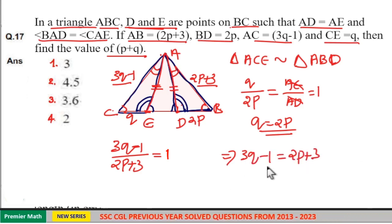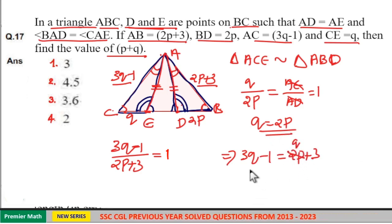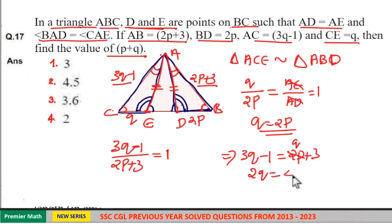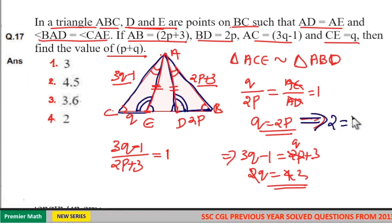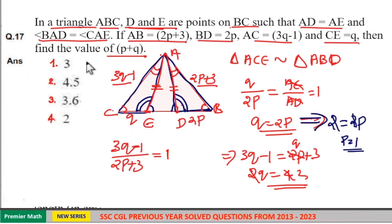From earlier, 2P equals Q. Substituting into 3Q minus 1 equals 2P plus 3: replacing 2P with Q gives 3Q minus Q equals 3 plus 1, so 2Q equals 4, meaning Q equals 2. Since Q equals 2 and 2P equals Q, we get P equals 1. Therefore, P plus Q equals 1 plus 2, which equals 3.